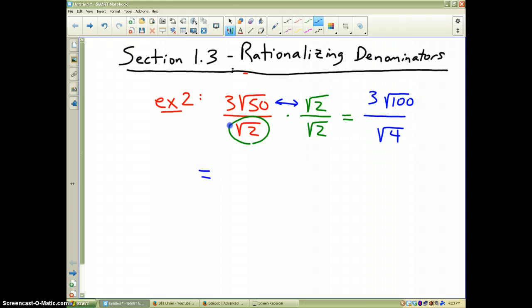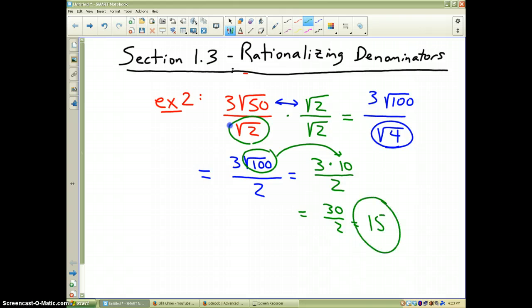That's equal to, well, the denominator is easy. The square root of 4, that's 2. On the top, we have 3 times the square root of 100. Hopefully you recognize that's also pretty simple because the square root of 100 is equal to 10. So I have 3 times 10 divided by 2. If you simplify that, you get 30 divided by 2, which is equal to 15. So this one actually works out very nicely. And that is your final answer.